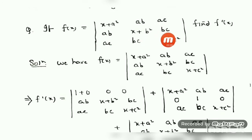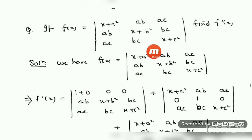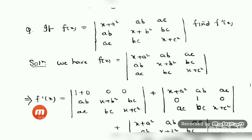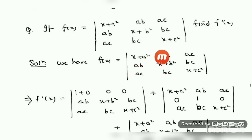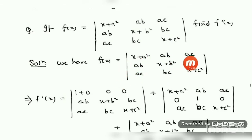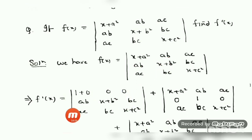First you write down your f(x) as given. Then to get f'(x), you have to find out d/dx of f(x). Differentiating the first row directly: d/dx of (x + a²) is 1 (since a² is constant), d/dx of a·b is 0, and d/dx of a·c is also 0. Keep the rest as it is: second row a·b, (x + b²), b·c; third row a·c, b·c, (x + c²).